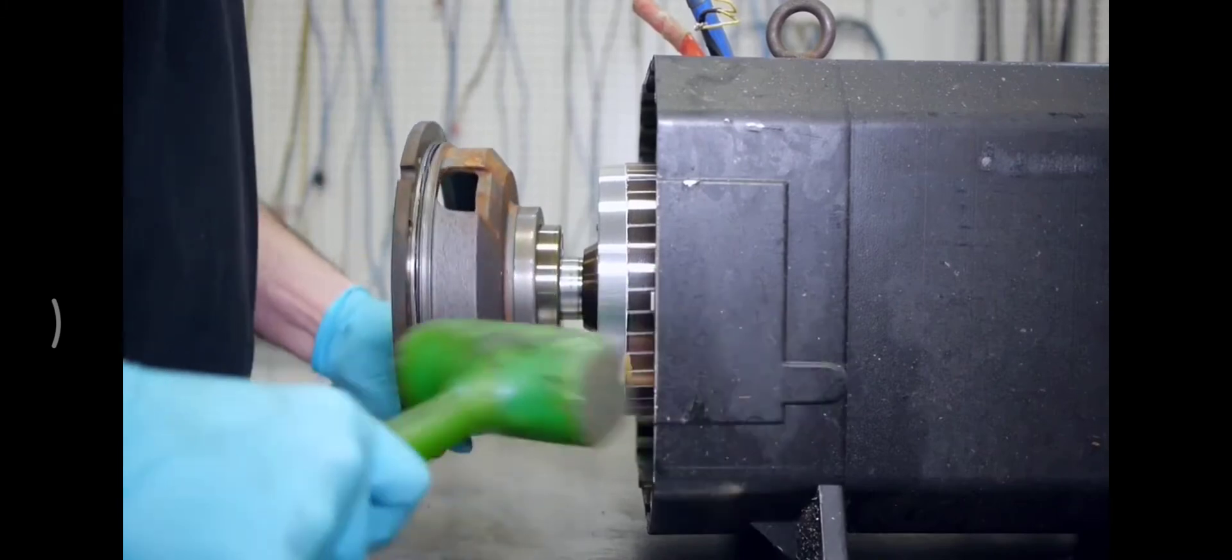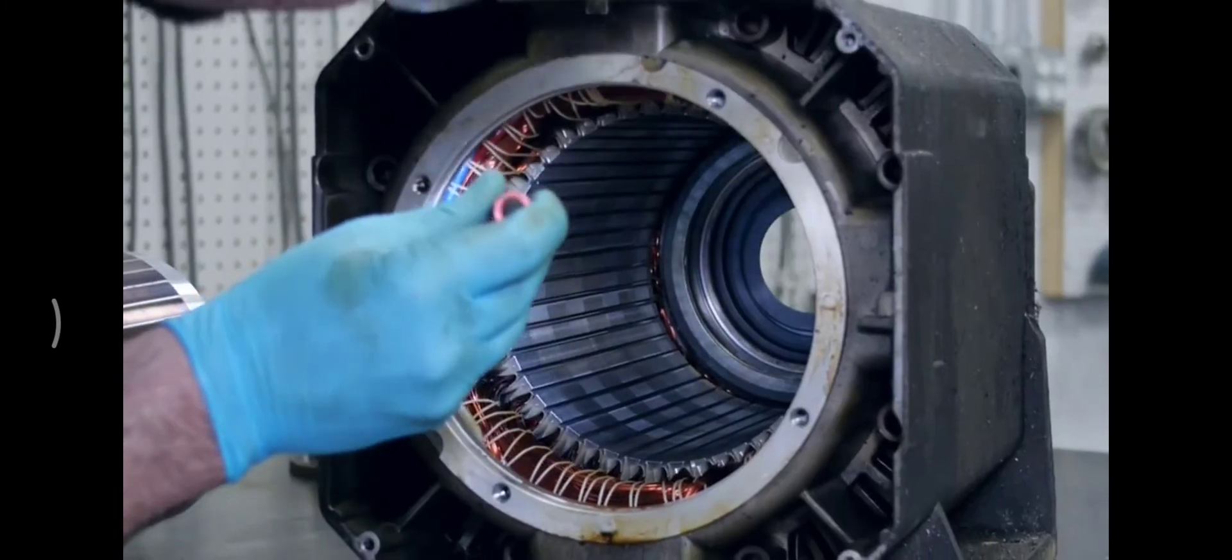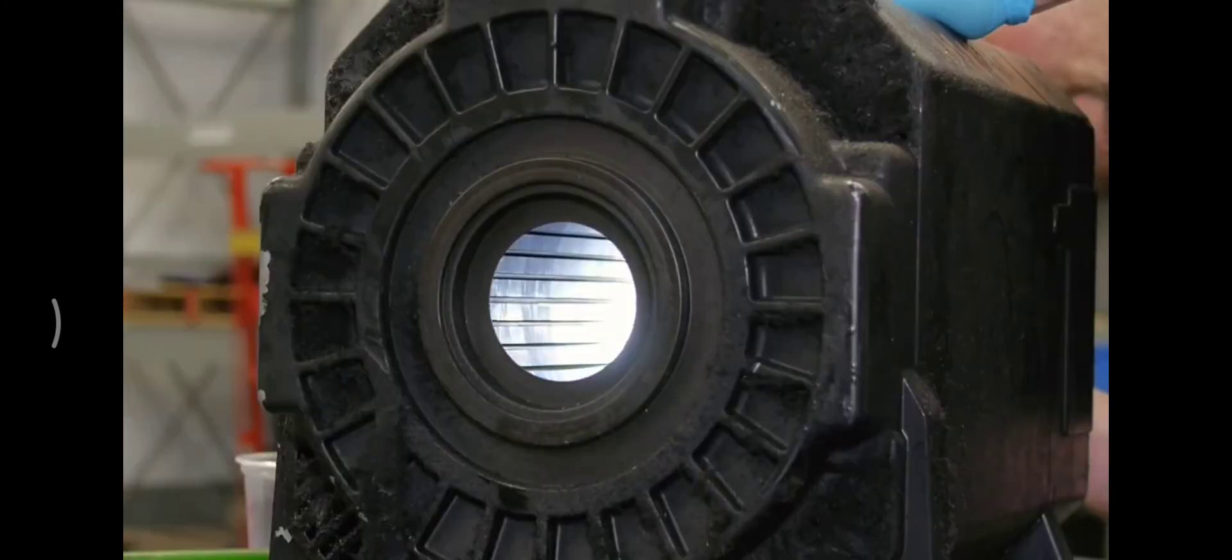The rotor is removed from the stator and the bad bearings removed. Our technician visually inspects the motor windings and the bore of the stator for obvious trouble spots.